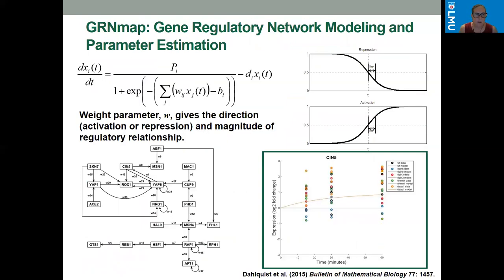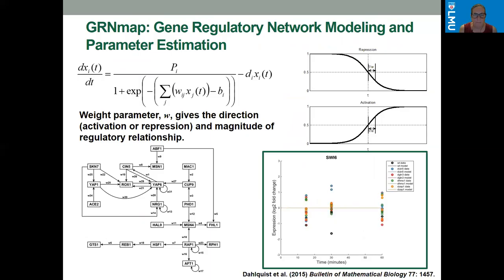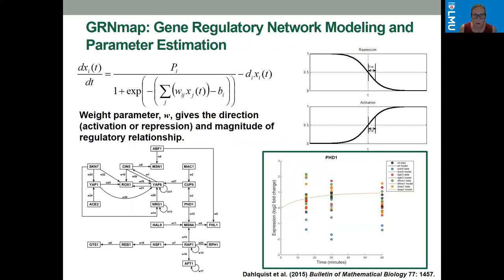GreenSight was originally developed in 2014 as a companion software for GreenMap, which stands for Gene Regulatory Network Modeling and Parameter Estimation. In this MATLAB software, we use differential equations to estimate weight parameters from DNA microarray data for small to medium scale gene regulatory networks. The first network we used is shown in the lower left corner, and that diagram was drawn in Adobe Illustrator, which took quite a long time — so we were motivated to develop GreenSight to make drawing small networks faster.